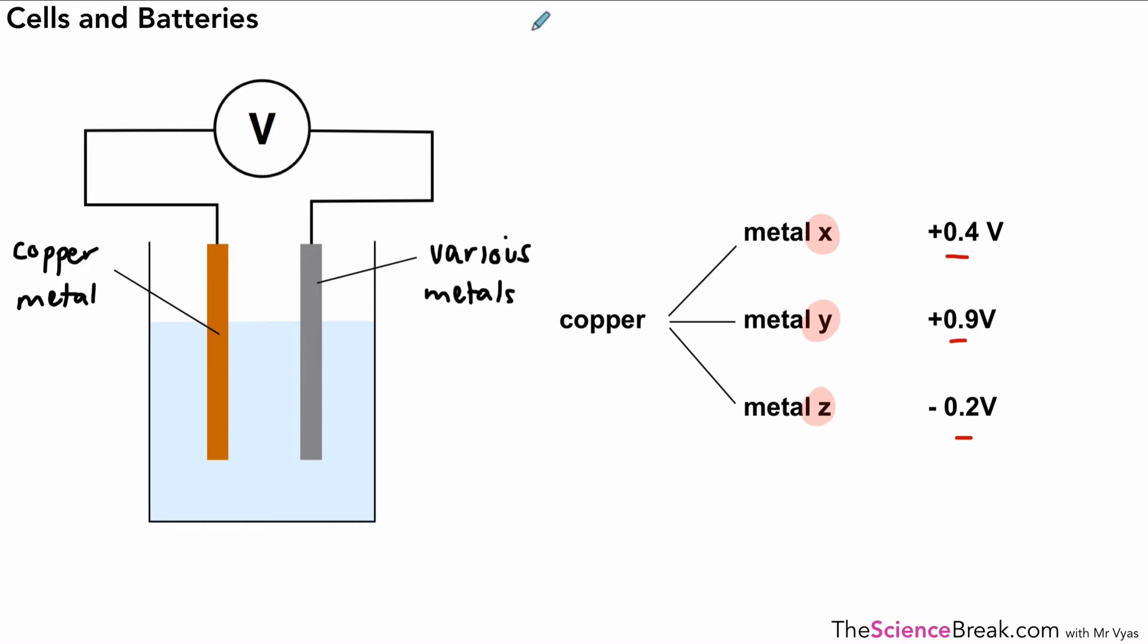And one key and important point to notice here is that the bigger the difference in the reactivities, the bigger the potential difference. So a bigger difference in PD is because of the bigger difference in reactivity of the metals.